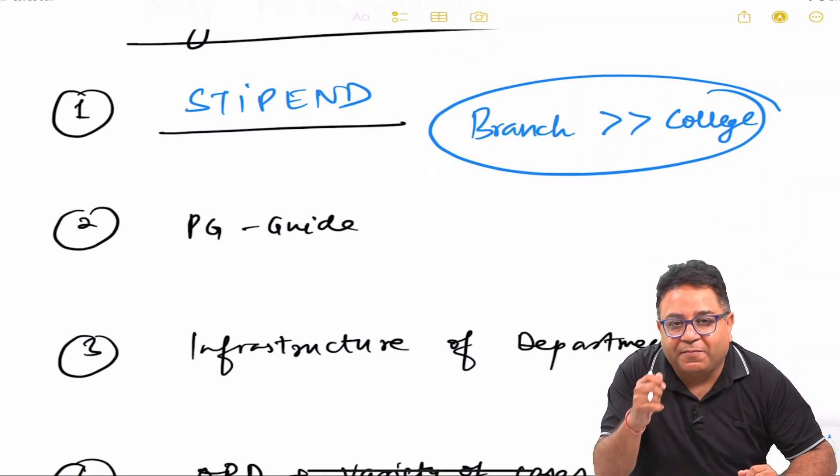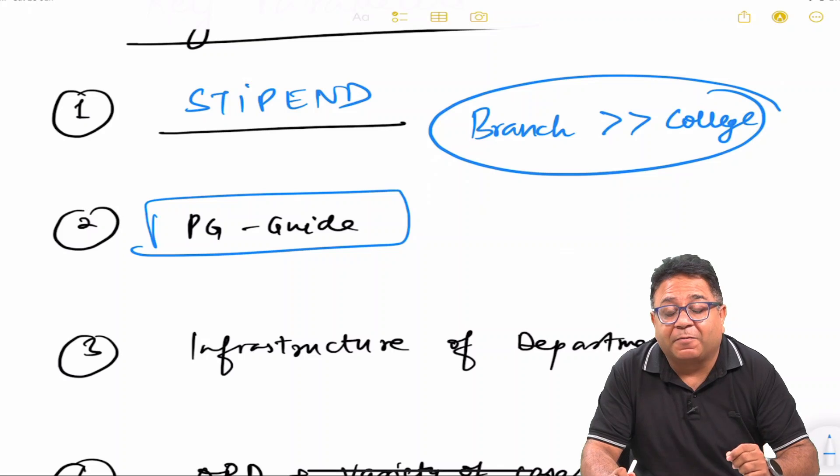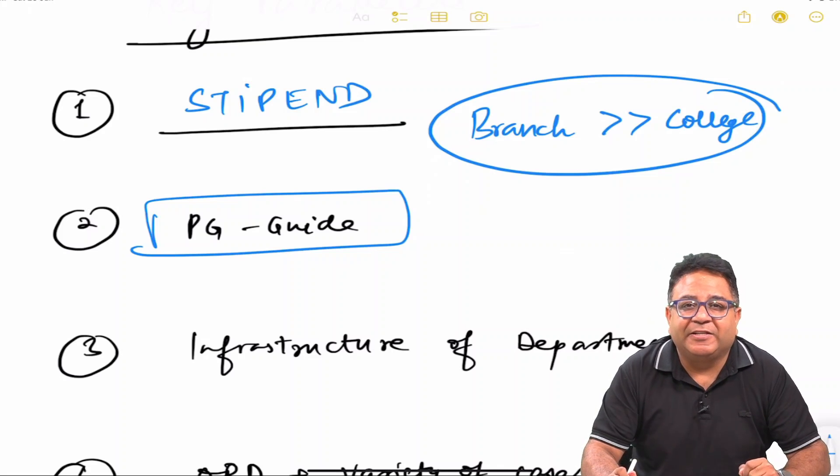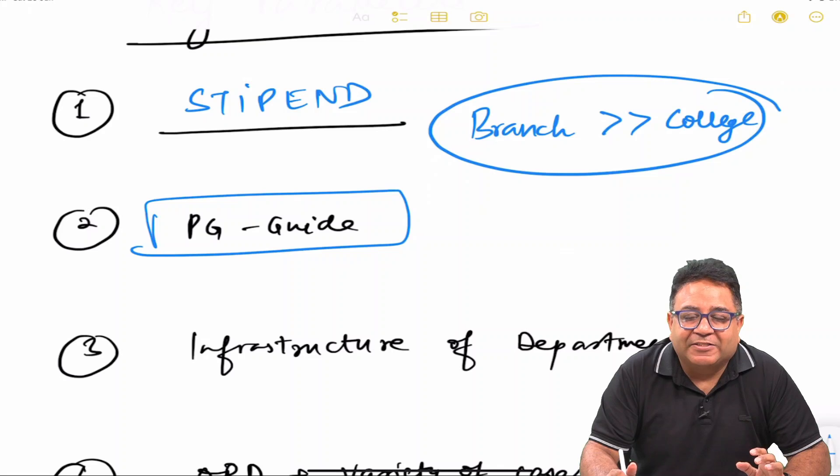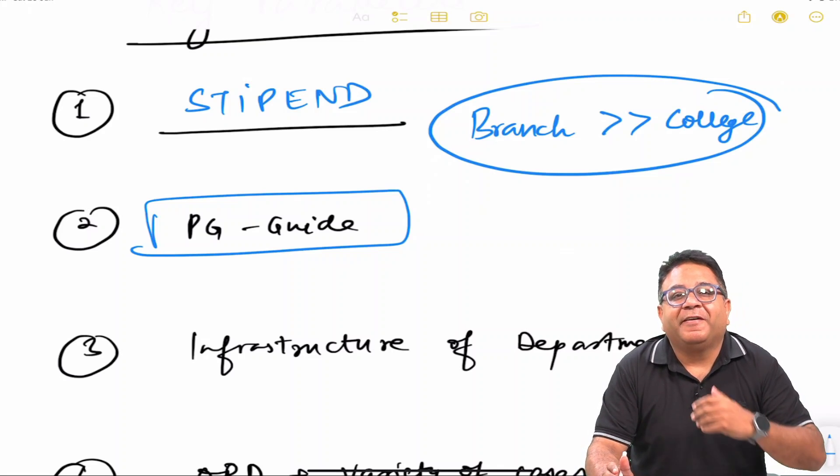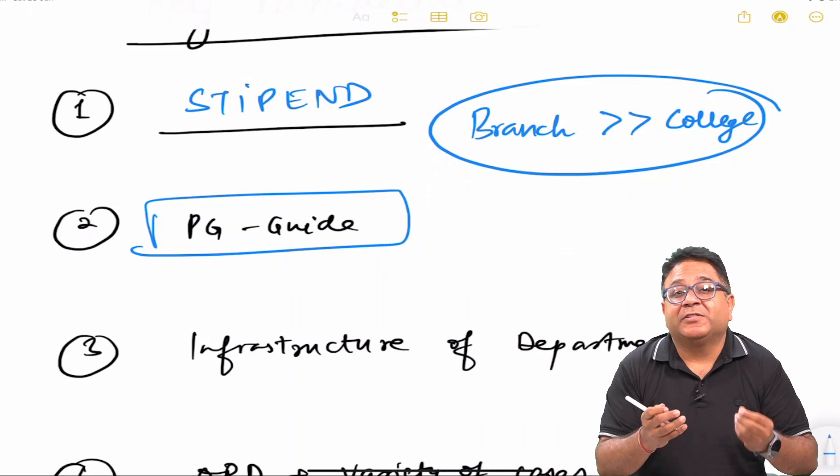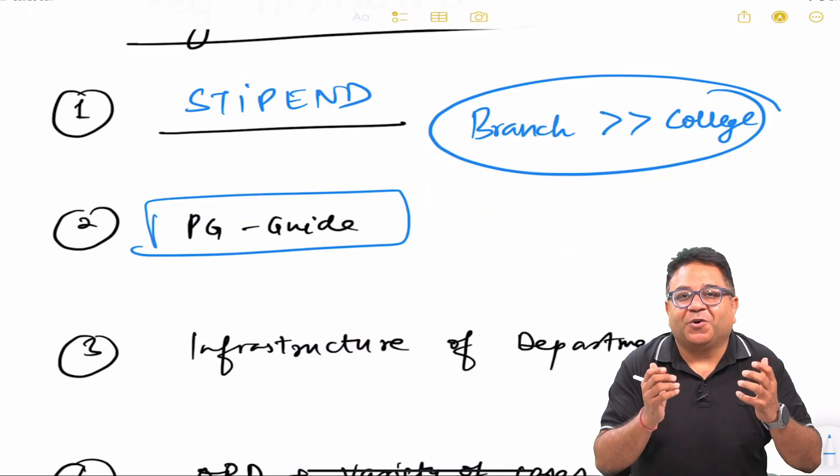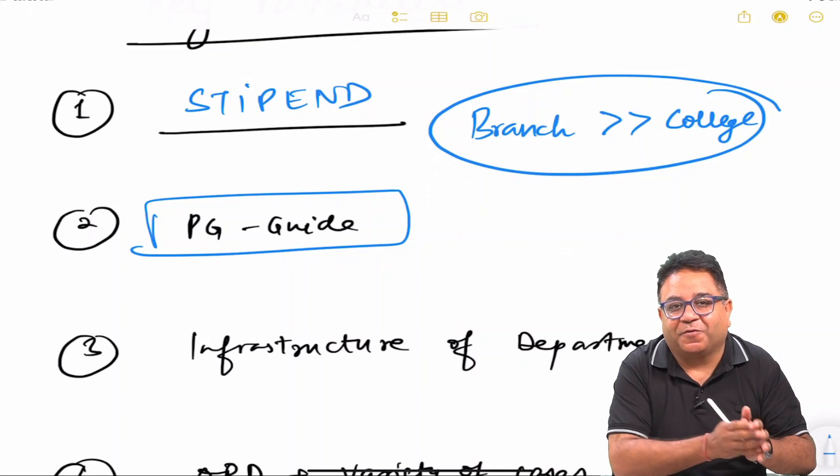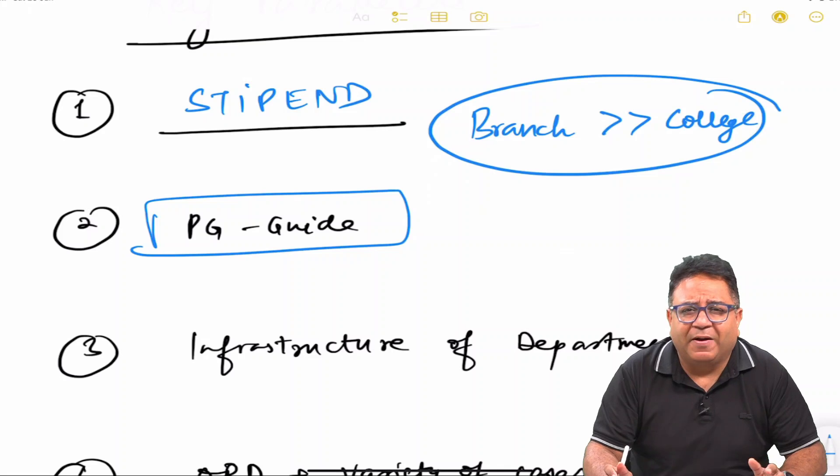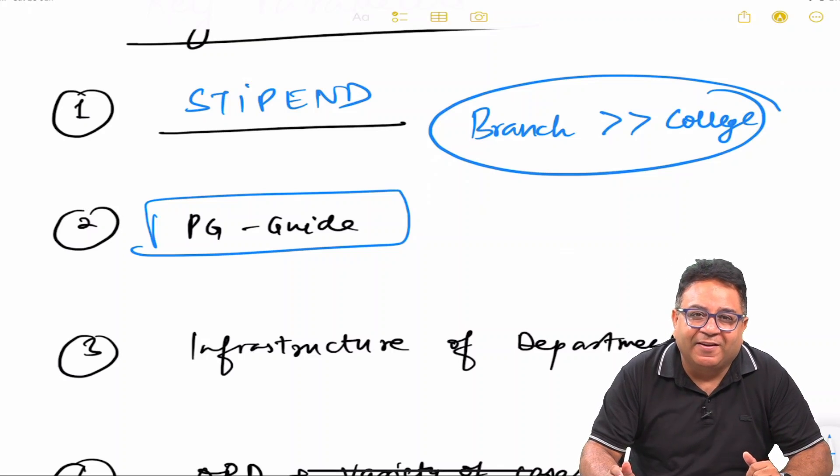Then comes the important parameter of how you select a college or a branch or a department in any particular GDC or central government institutes. It's the PG guide. There are guides who have phenomenal reputations, so it's better, it's a privilege, it's a once-in-a-lifetime bonus opportunity for you to be learning under them. That remains with you for rest of your life if your guide is good. It matters a lot.